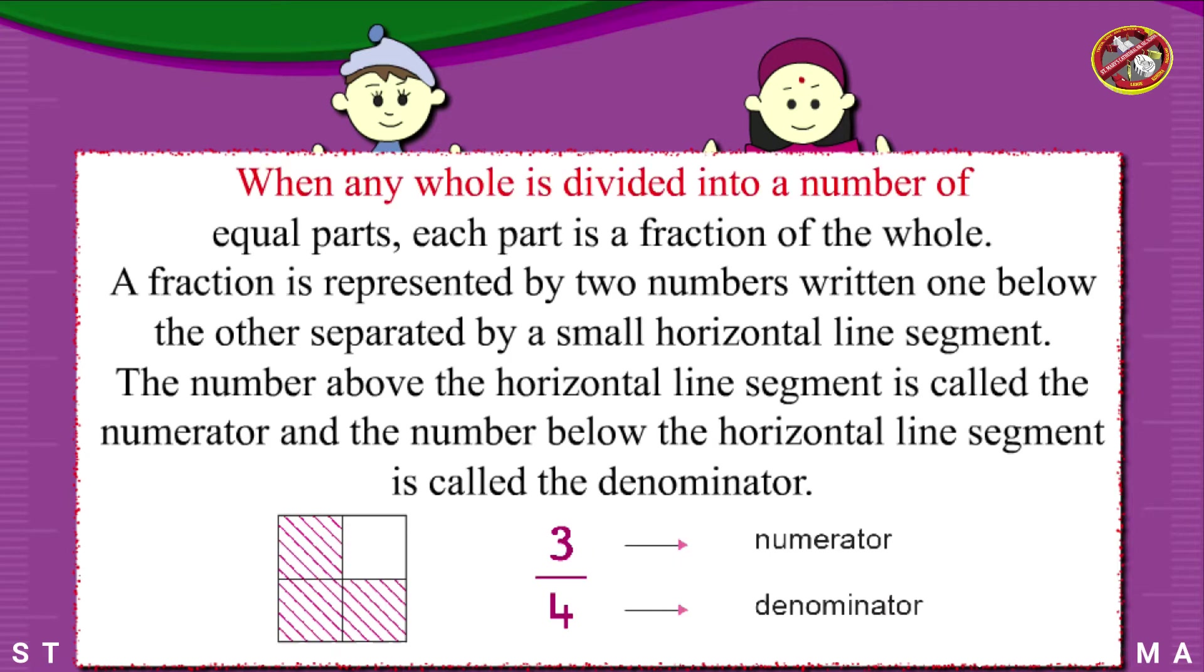When any whole is divided into a number of equal parts, each part is a fraction of the whole. A fraction is represented by two numbers written one below the other, separated by a small horizontal line segment. The number above the horizontal line segment is called the numerator, and the number below is called the denominator.